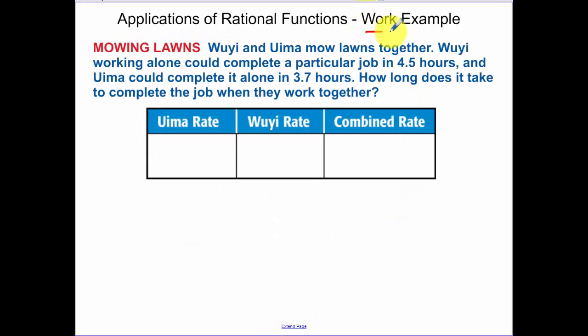Our last example, and this is a work example, where you're talking about how much work can two people do together. So we have two people mow lawns together. One person working alone can complete the particular job in 4.5 hours, and the other person can complete it in 3.7 hours. How long does it take for them to work together?